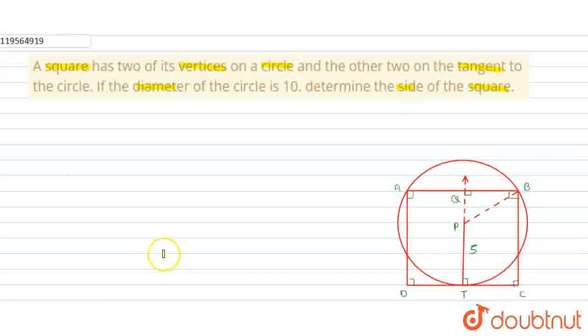In this question, we have to say that the square's two vertices A and B are on the circle, and the other vertices D and C are on the tangent to the circle.